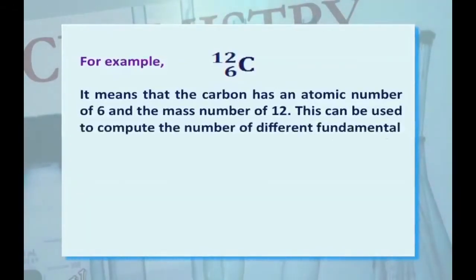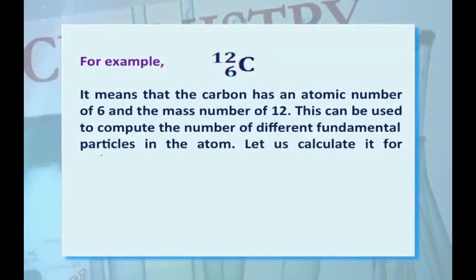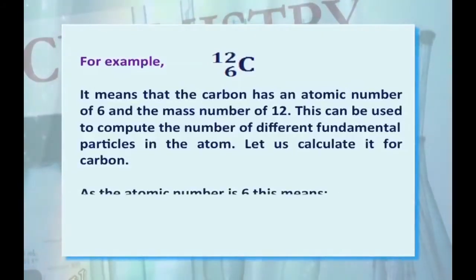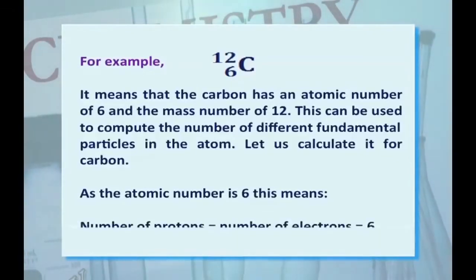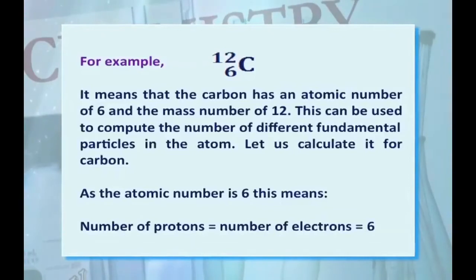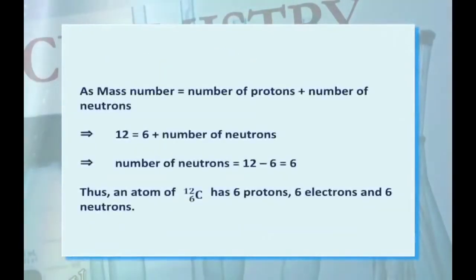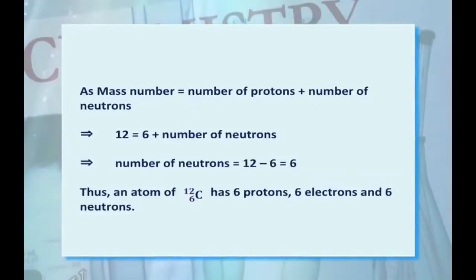This notation can be used to compute the number of different fundamental particles in the atom. For carbon, since the atomic number is 6, the number of protons equals the number of electrons equals 6, because it is a neutral atom. Since mass number equals protons plus neutrons, we get 12 = 6 + neutrons, so the number of neutrons equals 6. Thus, an atom of ₆C¹² has 6 protons, 6 electrons, and 6 neutrons.